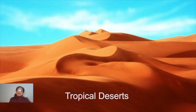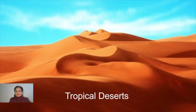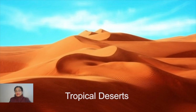Here we are going to talk about the tropical deserts. As the name suggests, tropical means these deserts lie basically within the tropical zone, or a little bit beyond that. We will talk about the location of these deserts, the areas in different countries and continents, what type of vegetation, temperature and rainfall conditions are found, and also the wildlife and human adaptations.